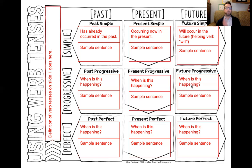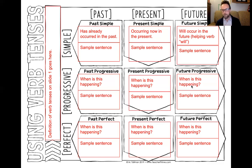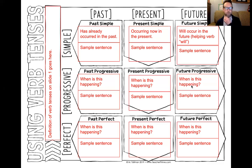Today we're going to be looking at the progressive verbs — past, present, and future progressive. We're looking for when each one is happening, as well as a sample sentence for each one. By the time we're done with these three videos, this entire chart should be filled out, and we will be ready to show how much we've learned.